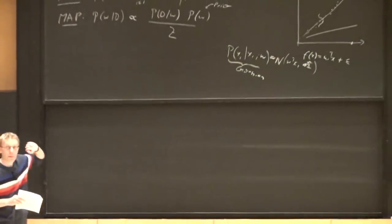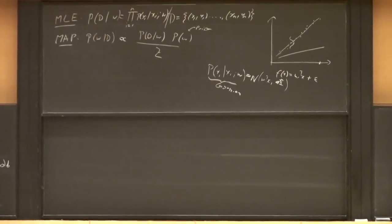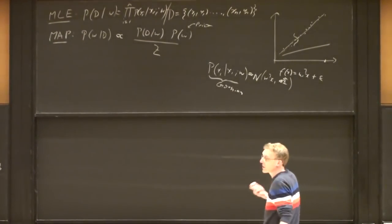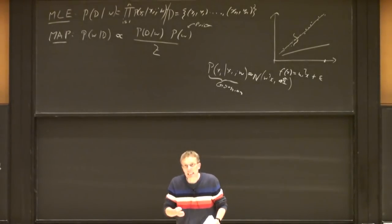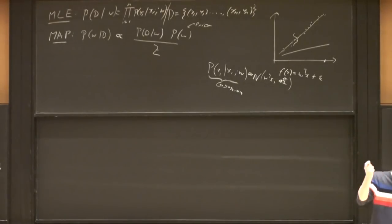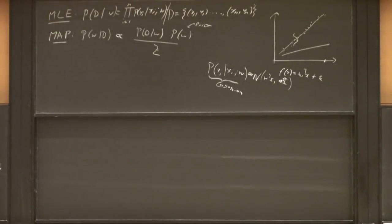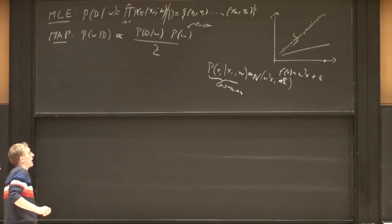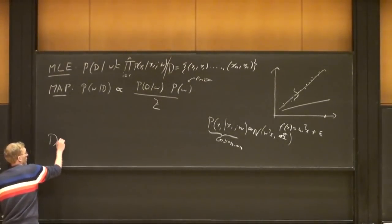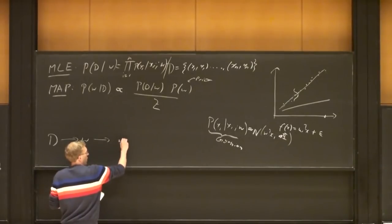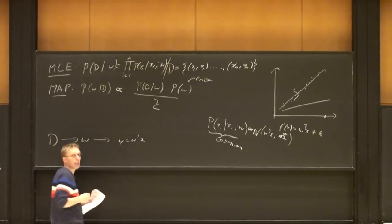So let's go back to MLE and MAP. We have our data D drawn from some distribution we don't know. We take this data, fit the line — fit our model W — and the only reason we do this is to make predictions later on for a test point X. The flow is: given our data, we learn a W, and from that W we compute Y equals W transpose X for some particular test point X.